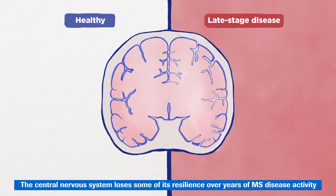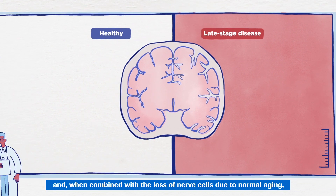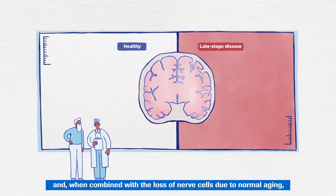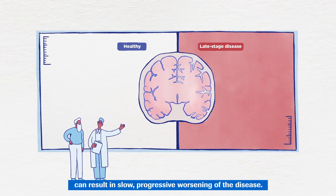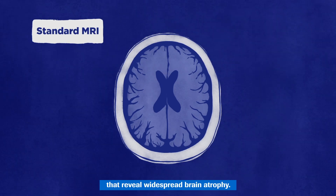The central nervous system loses some of its resilience over years of MS disease activity and, when combined with the loss of nerve cells due to normal ageing, can result in slow, progressive worsening of the disease. Age-related neurodegeneration can be detected by MRI sequences that reveal widespread brain atrophy.